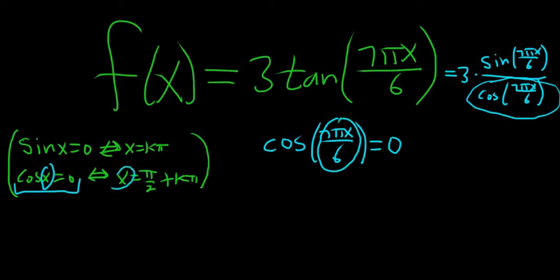So x is equal to pi over 2 plus k pi. So here we take this, 7 pi x over 6, and we set it equal to pi over 2 plus k pi.